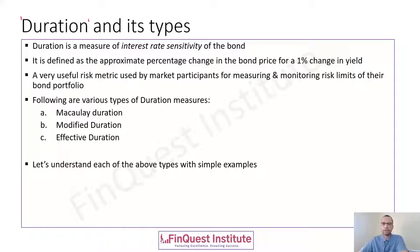We have taken an example of one percent here, but this quantum can be different — we can have a smaller percentage change as well for our analysis. Duration is a very effective and frequently used metric by market participants, both by banks and financial institutions, mainly for measuring the overall risk of their bond portfolio.